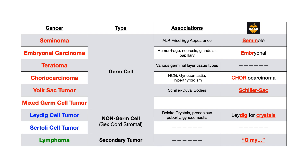Here's a summary chart: seminoma — fried egg (seminole/semen mnemonic); embryonal carcinoma — ember for hemorrhage and necrosis; teratoma — terror-toma; choriocarcinoma — gynecomastia and hyperthyroidism; yolk sac — Schiller-Sack looks like a kidney; mixed germ cell — nothing to know; Leydig cell — dig for Reinke crystals; Sertoli cell — nothing to know; lymphoma — oh my, lymphomia. Even though there are many testicular tumors, it's very buzzwordy and the test writer always gives you a defining feature.